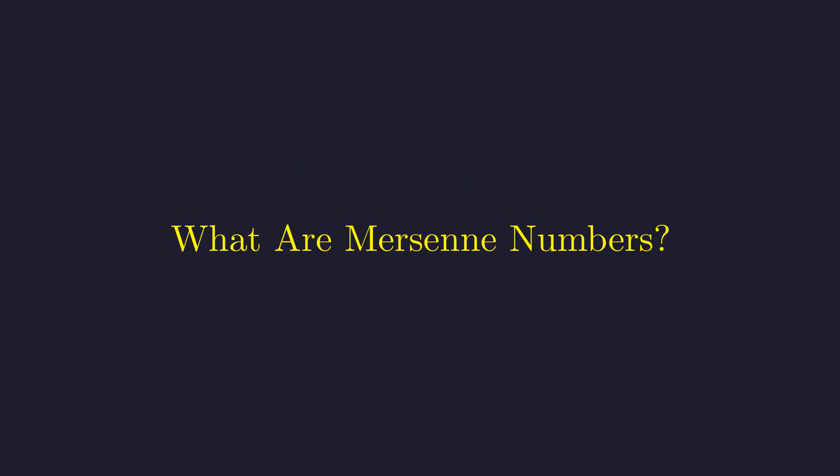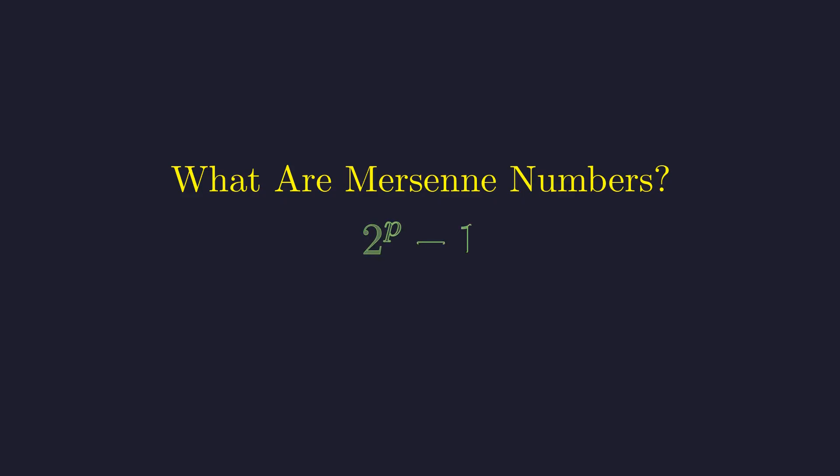Before we dive into 2 to the 127 minus 1, we need some context. Numbers like this actually belong to a special family called Mersenne numbers. A Mersenne number is any number of the form 2 to the n minus 1.